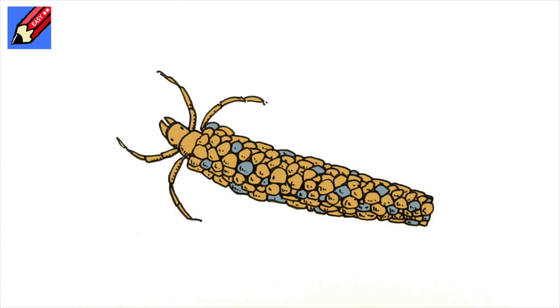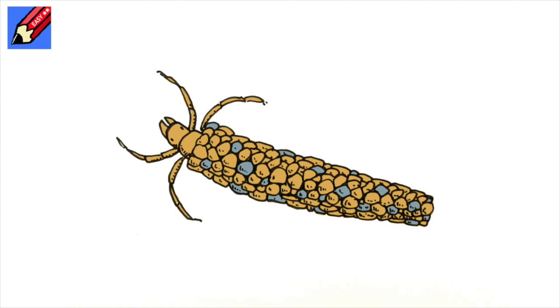And then all you need to do is to colour it in a yellowy kind of brown and shade in individual little pebbles in different colours to kind of accentuate that there are little pebbles.